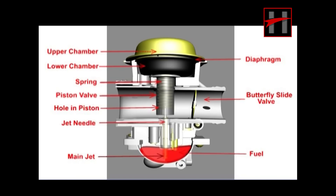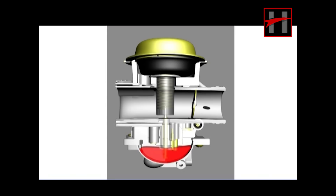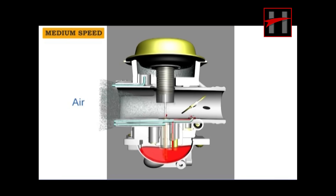The functioning of the carburetor at medium speed is similar to that at slow speed, except that the butterfly slide opens from one-fourth to three-fourth position, allowing more fuel to enter from the main jet.